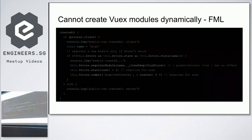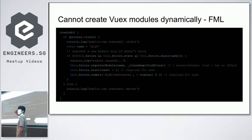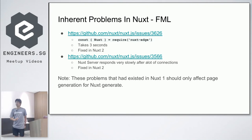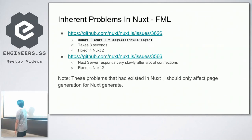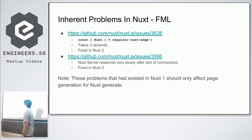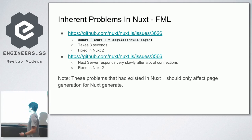Another problem: Vuex `store.registerModule` should work normally but doesn't in Nuxt — the state gets wiped out. The workaround is to recreate the state, and then it works. That problem took about a day to figure out. There were also inherent performance problems before Nuxt 2, like slow initial load times — three seconds to load a single request. Under many requests, the server also responded very slowly, but thankfully both issues were fixed in Nuxt 2.